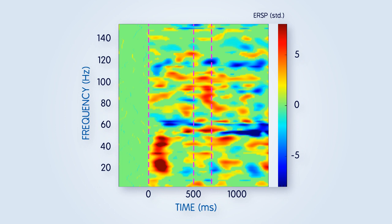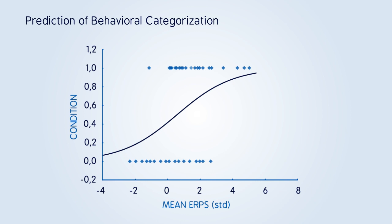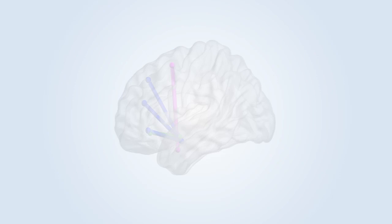In this time window, only the amygdala systematically discriminated the intentional actions and predicted its classification.